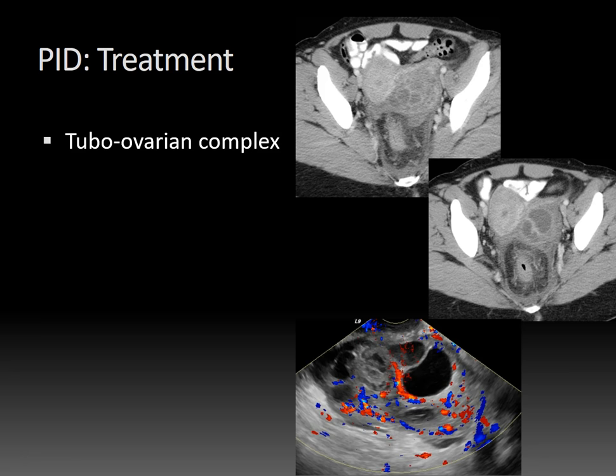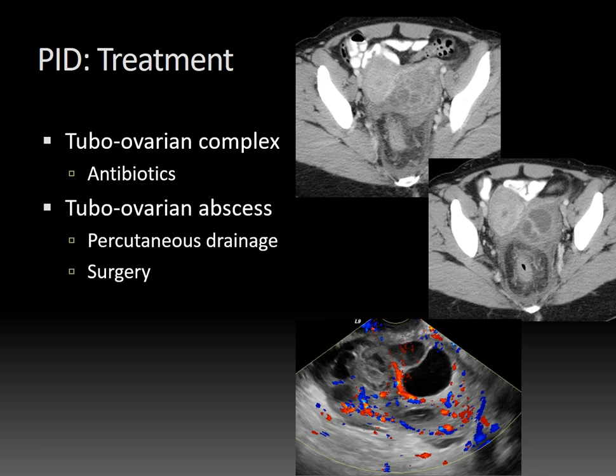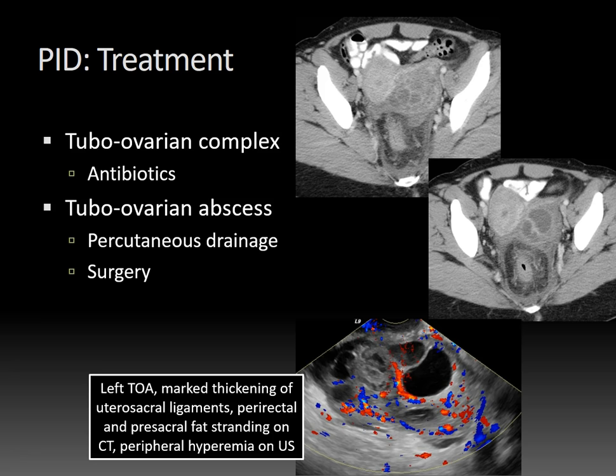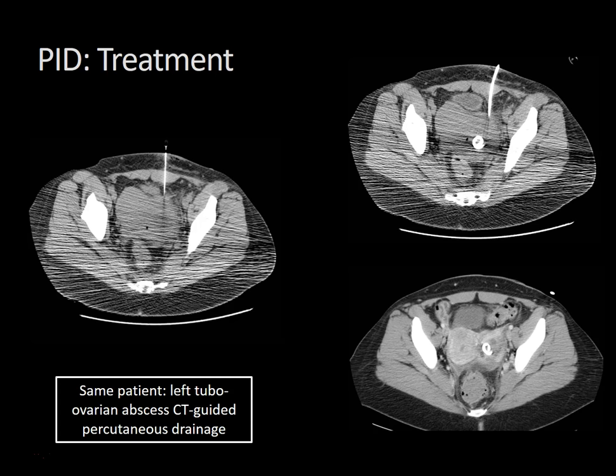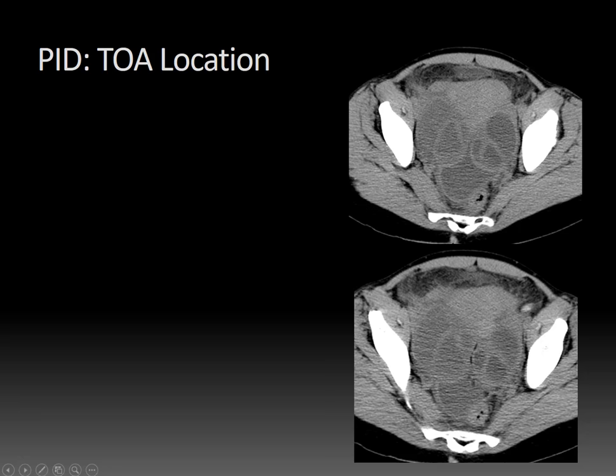Why differentiate between these two? It's important for treatment. If you have a tubovarian complex — salpingo-oophoritis — that's typically treated with antibiotics. However, once an abscess forms, that usually needs to go to drainage or surgery. Here you can see a patient with a large multi-loculated left tubovarian abscess with no normal ovarian architecture, marked thickening of the uterosacral ligaments, perirectal and pre-sacral fat stranding on CT, and extensive peripheral hyperemia on color Doppler ultrasound. This patient went on to have CT-guided percutaneous drainage of that left tubovarian abscess.